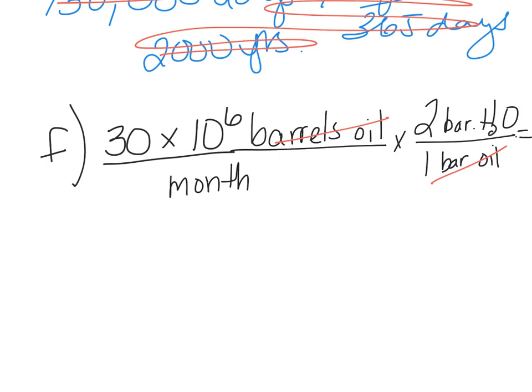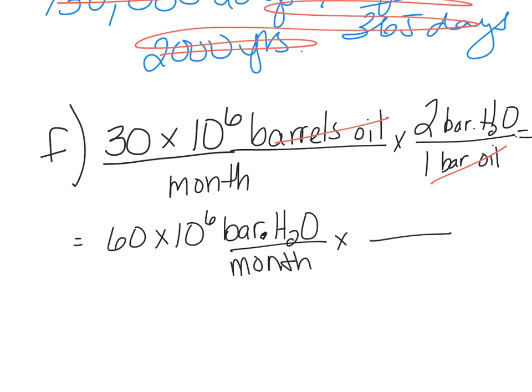So I'm going to get two times 30 is going to be 60 times 10 to the sixth barrels of water. But we want to know per year. So don't forget that part. A lot of students forget the last part, which is to convert it to years. So there's 12 months in a year. So now our months cancel and we're going to end up with barrels of water per year. So 60 times 12 is 720.